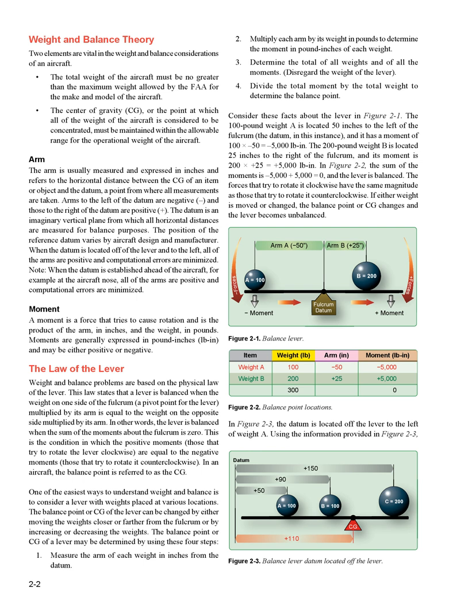The balance point or CG of a lever may be determined using four steps: 1. Measure the arm of each weight in inches from the datum. 2. Multiply each arm by its weight in pounds to determine the moment in pound-inches. 3. Determine the total of all weights and all moments, disregarding the weight of the lever. 4. Divide the total moment by the total weight to determine the balance point.